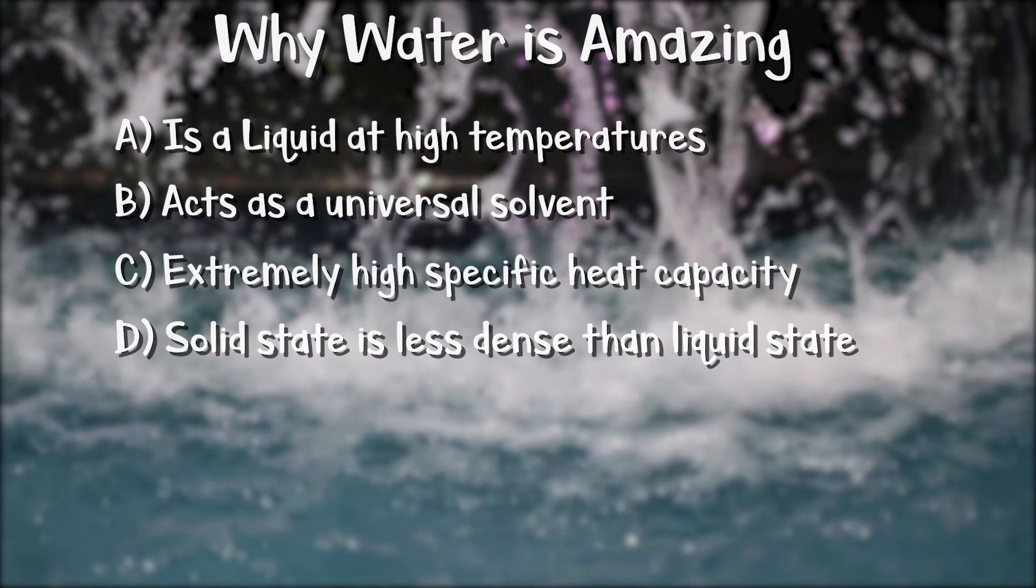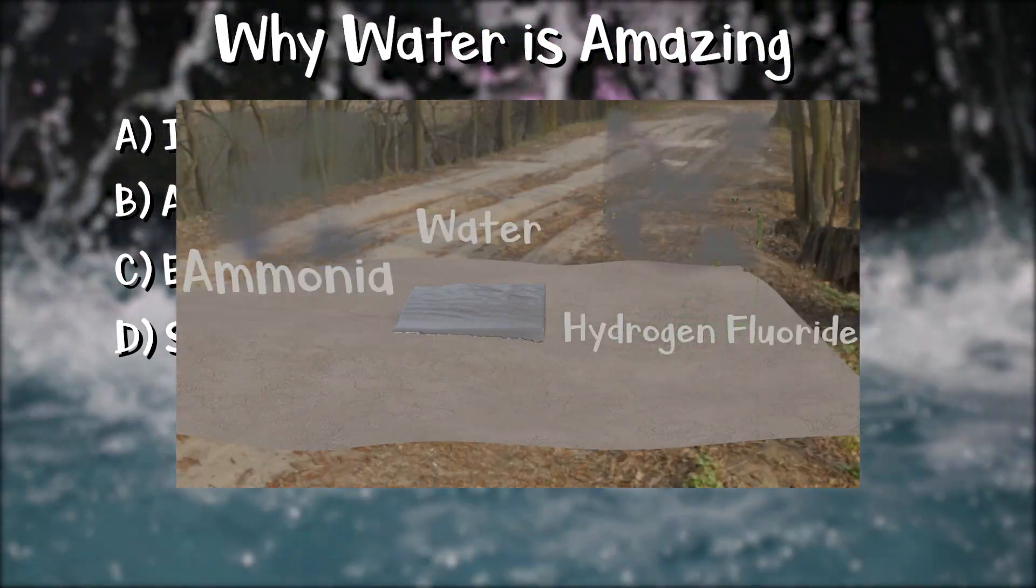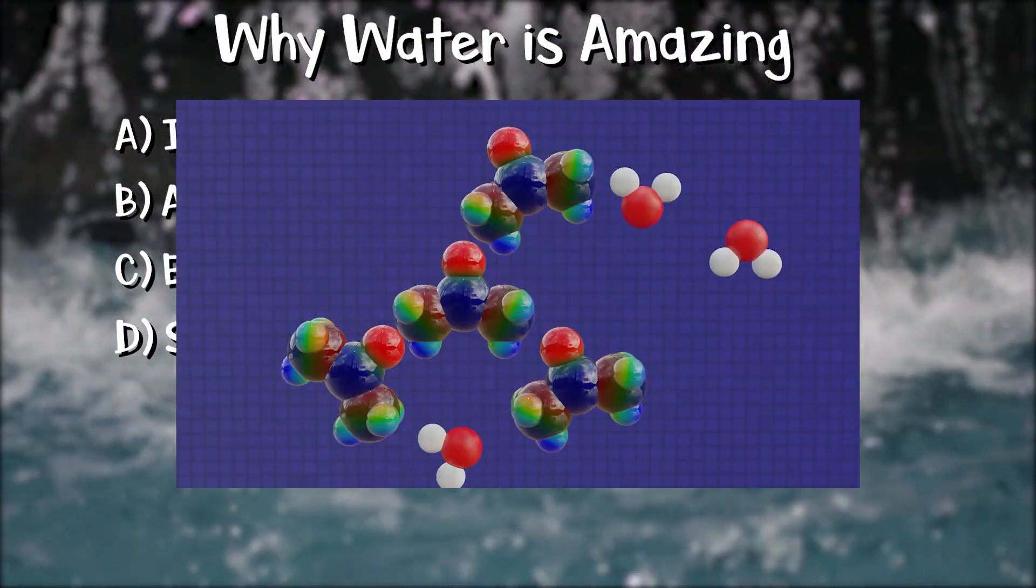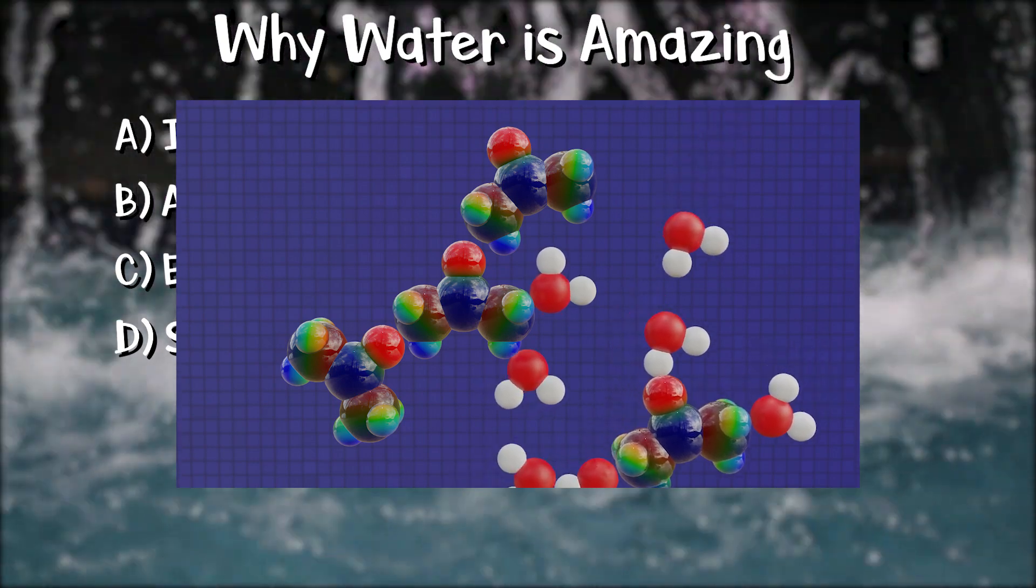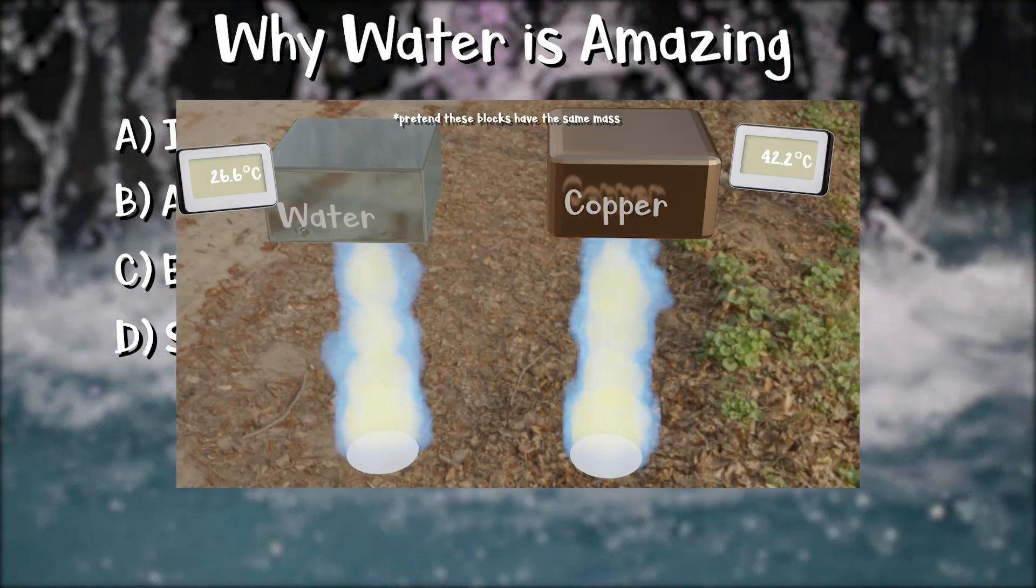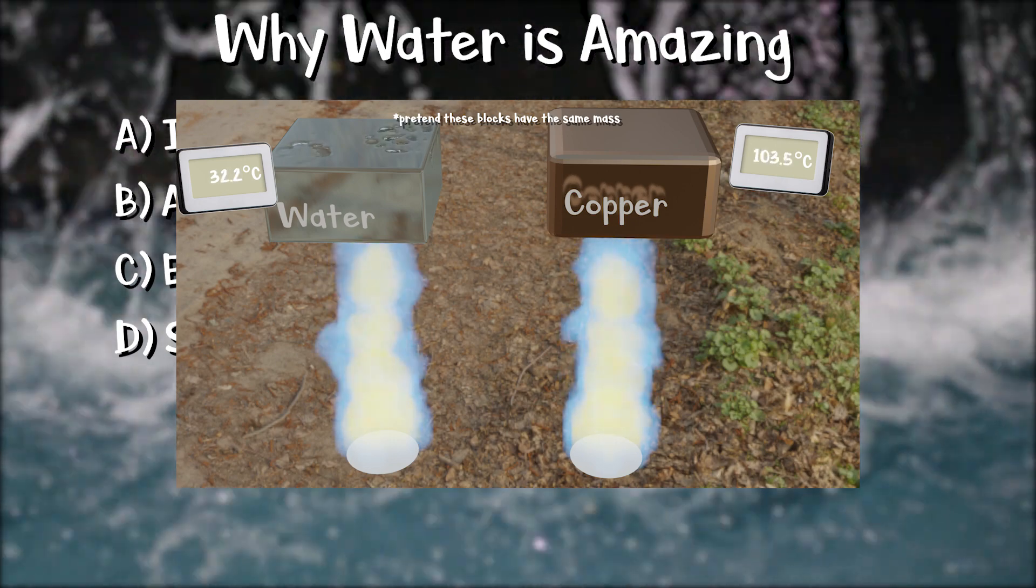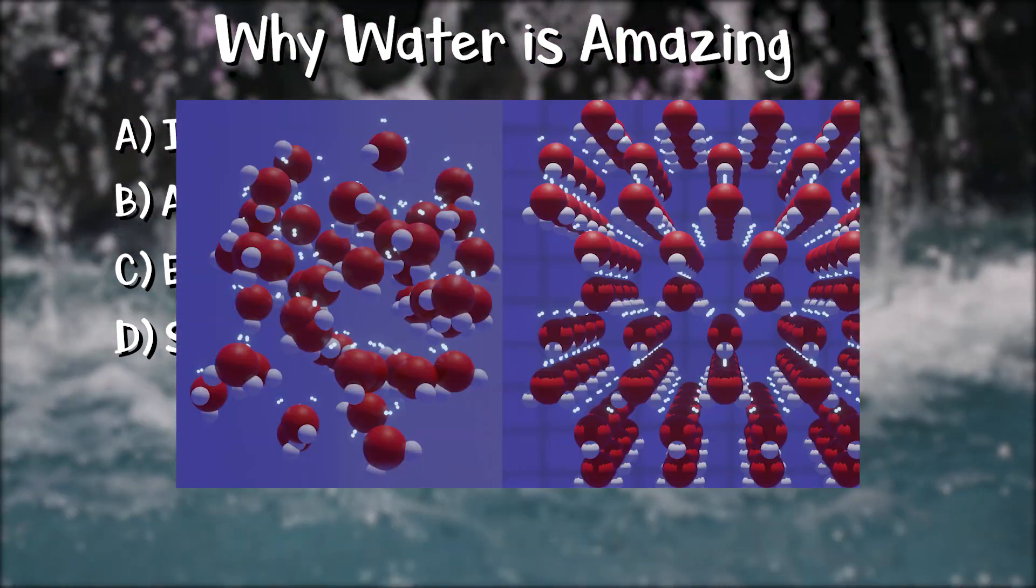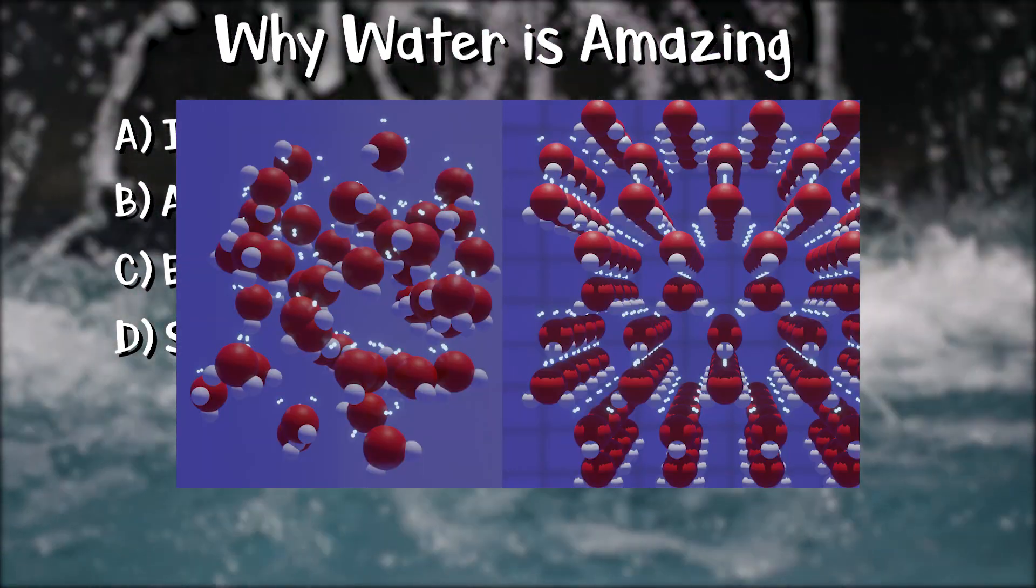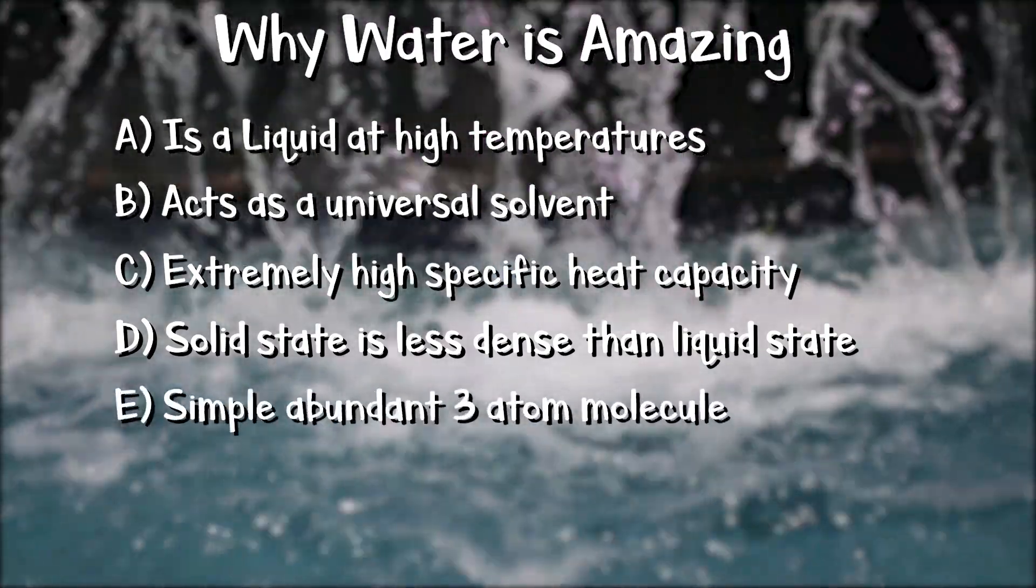So water exists as a liquid at temperatures where chemical and metabolic reactions can occur. It's the most polar stable liquid around, making it a universal solvent. It has an insanely high specific heat capacity, thus is a great thermoregulator, and its solid state is less dense than its liquid state. And all of this comes from a simple tiny three-atom molecule.